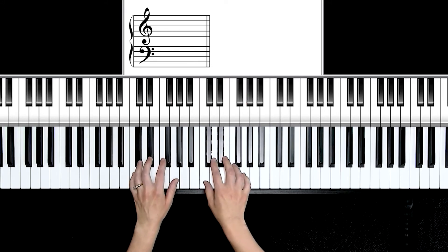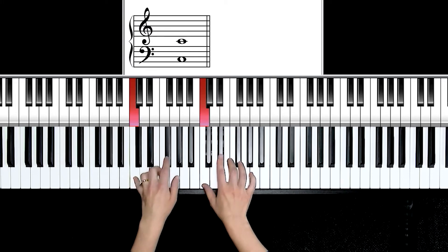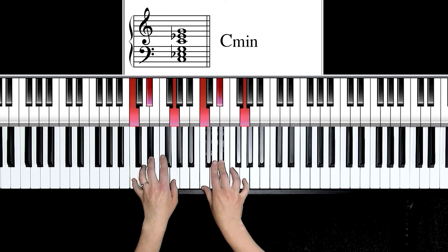Its third construction is a minor third on the bottom, a major third on the top. Let's count our half steps out. C up to E flat, one, two, three. Three half steps. E flat up to G, one, two, three, four. So our minor triads are a three plus a four in terms of their half step construction.